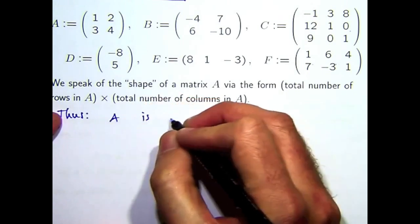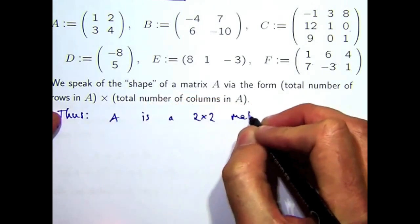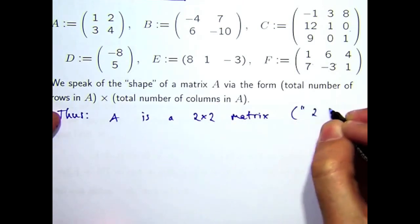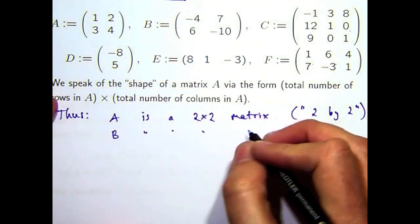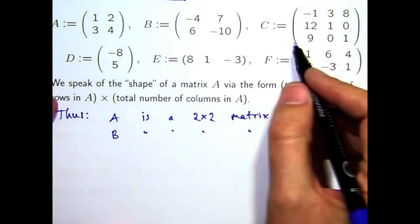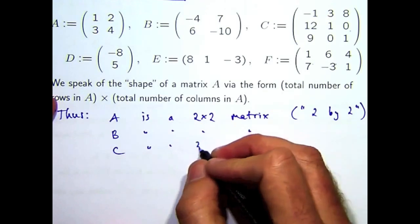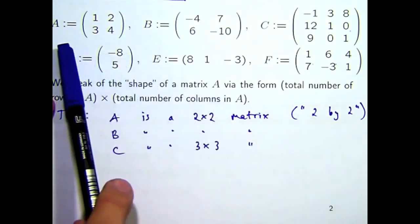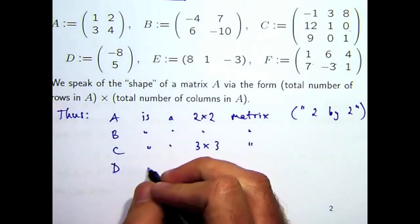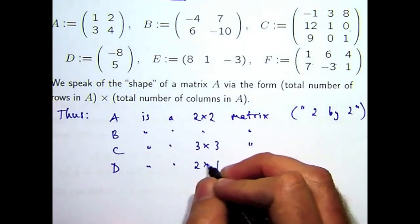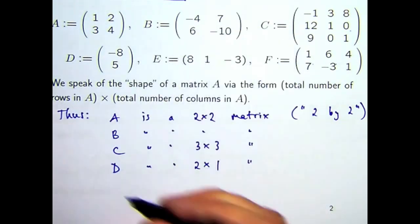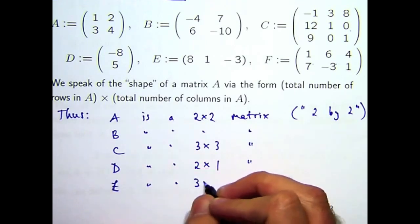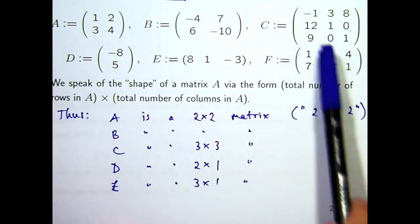So, that is a two by two matrix. B is also a two by two matrix. C is a three by three matrix. D, well, there's two rows and one column. E is one row, three columns. And F, two rows, three columns.